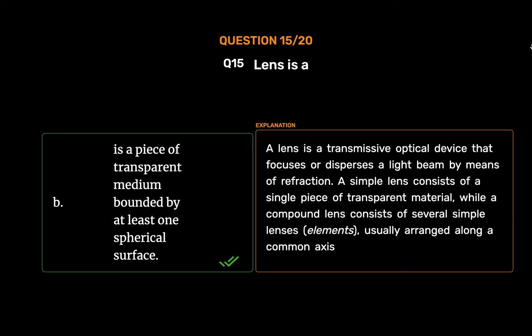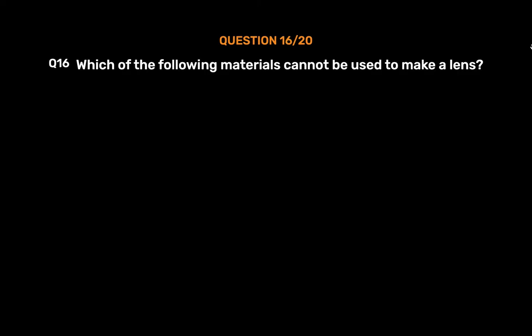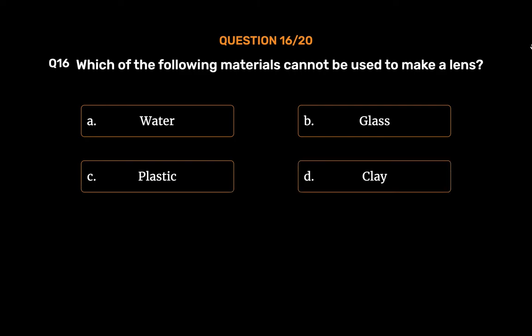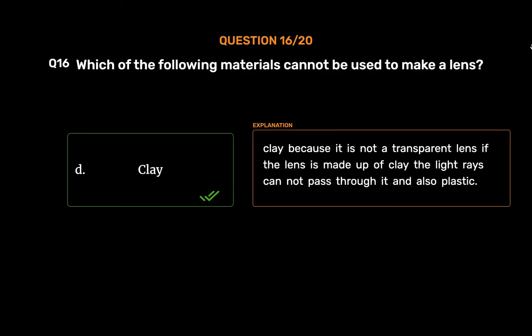Question No. 16: Which of the following materials cannot be used to make a lens? — Option A: Water, Option B: Glass, Option C: Plastic, Option D: Clay. The correct answer is Option D: Clay, because it is not transparent. If a lens is made of clay, light rays cannot pass through it.